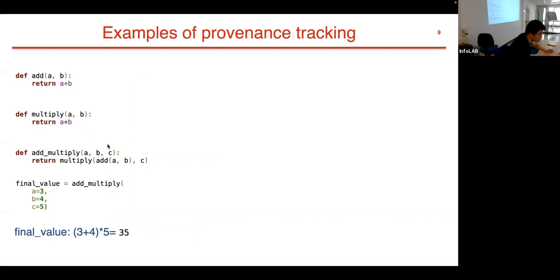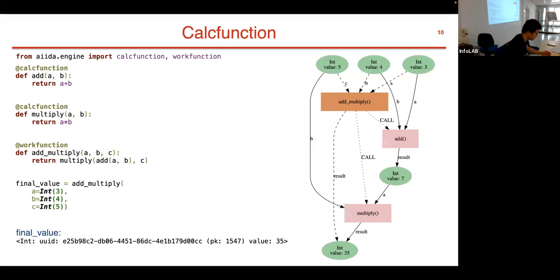This might be still a little bit abstract, so now we can start with some practical code to understand more about provenance tracking. Suppose we want to calculate 3 + 4 * 5. This is quite simple if we do this in Python. Although this is not a straightforward way to do this, if we use functions to calculate this, we can define three functions. The first is this addition, then this multiplication, and then this add_multiply calls these two functions and returns its results. So we have this add_multiply function to do the calculation and get the final value.